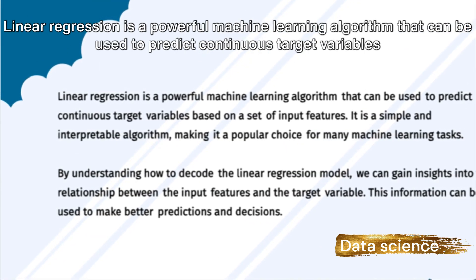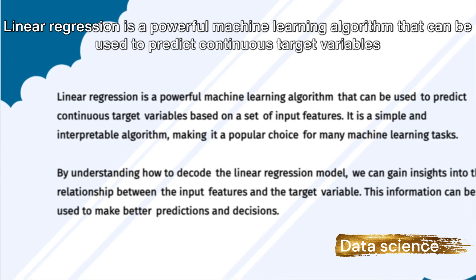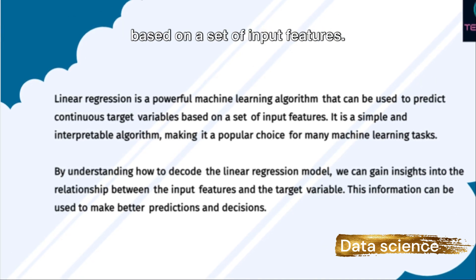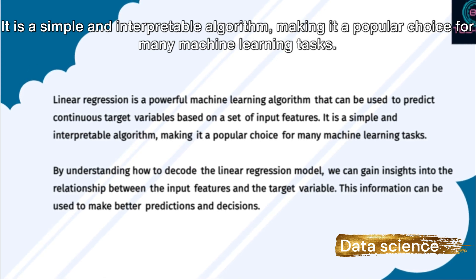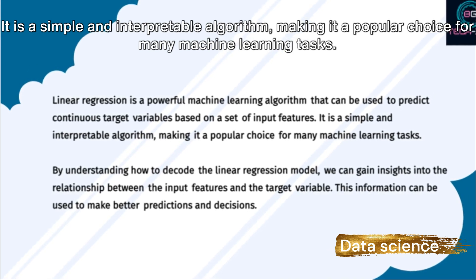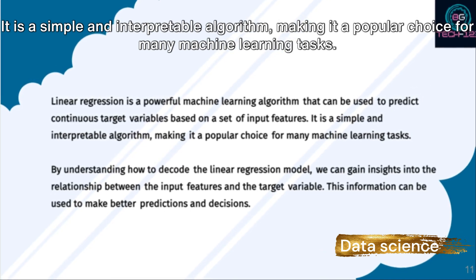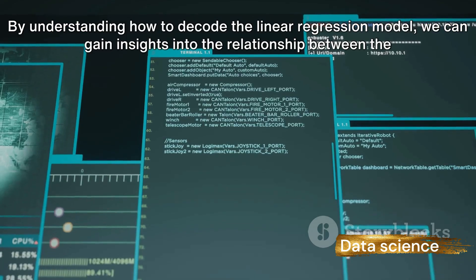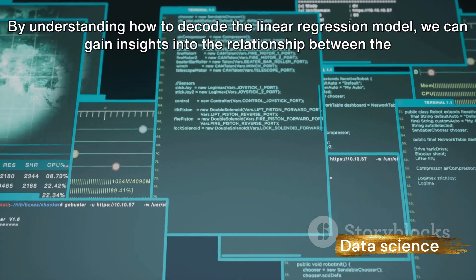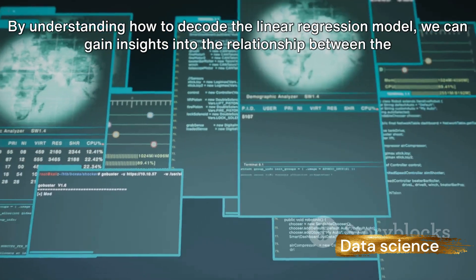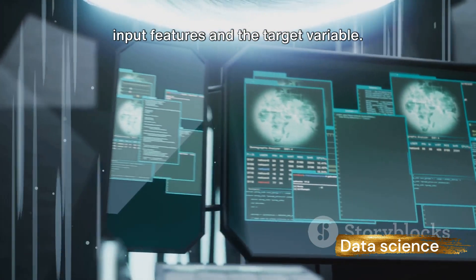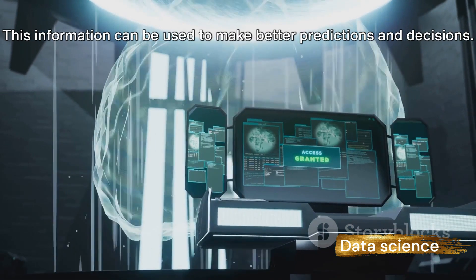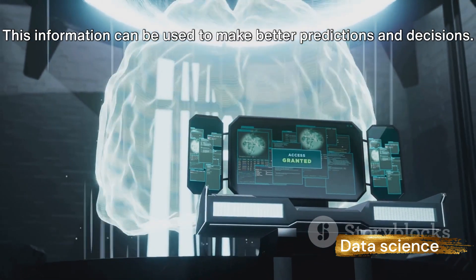Linear regression is a powerful machine learning algorithm that can be used to predict continuous target variables based on a set of input features. It is a simple and interpretable algorithm, making it a popular choice for many machine learning tasks. By understanding how to decode the linear regression model, we can gain insights into the relationship between the input features and the target variable, which can be used to make better predictions and decisions.